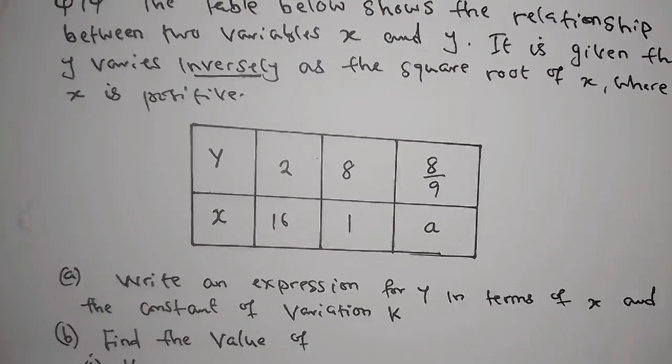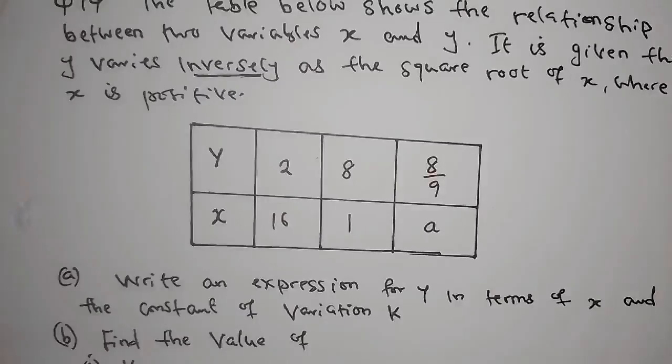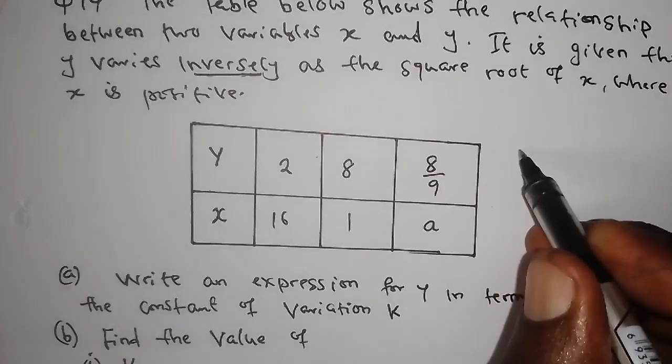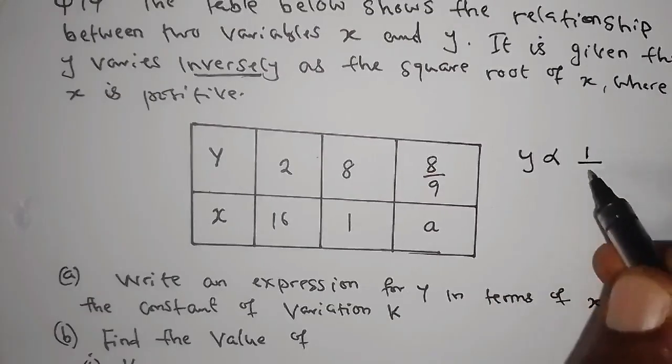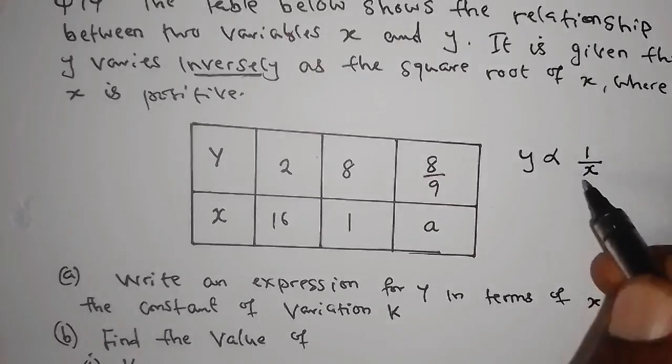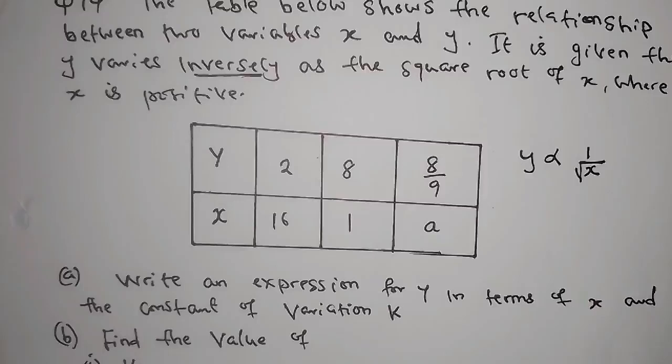So from there, we know that we have this table. And now, when you're looking at inverse variation, you will have a relationship y varies as 1 over x. Now they're saying the square root of x.